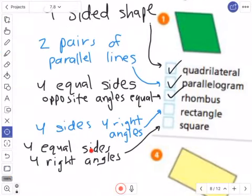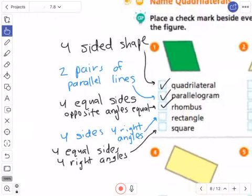Is it a square? Four equal sides. Ooh, yes. Four equal sides. That's why it's a rhombus. Four right angles, though. No, not right angles. So those are the checks for that one.